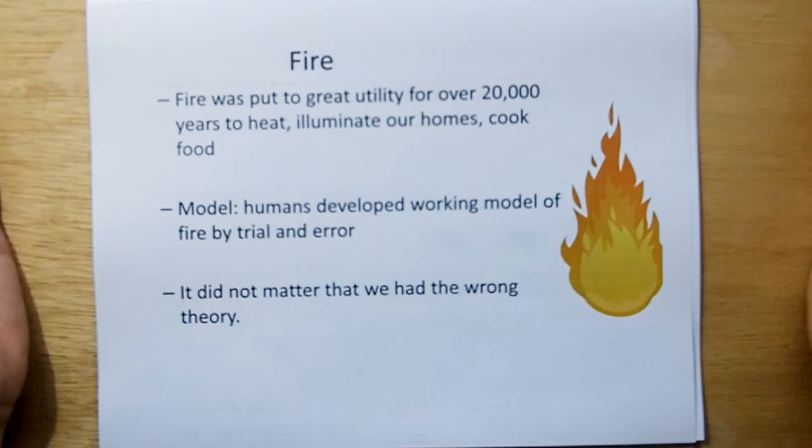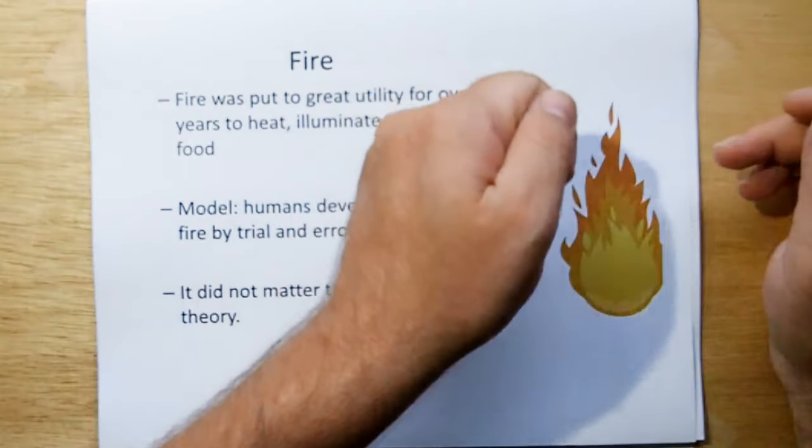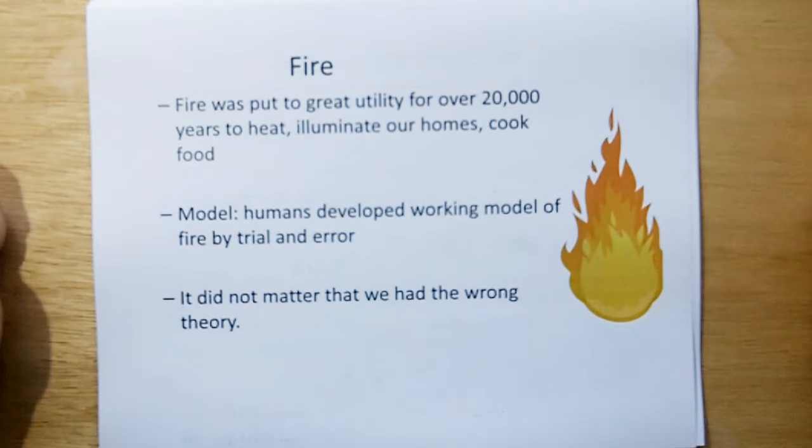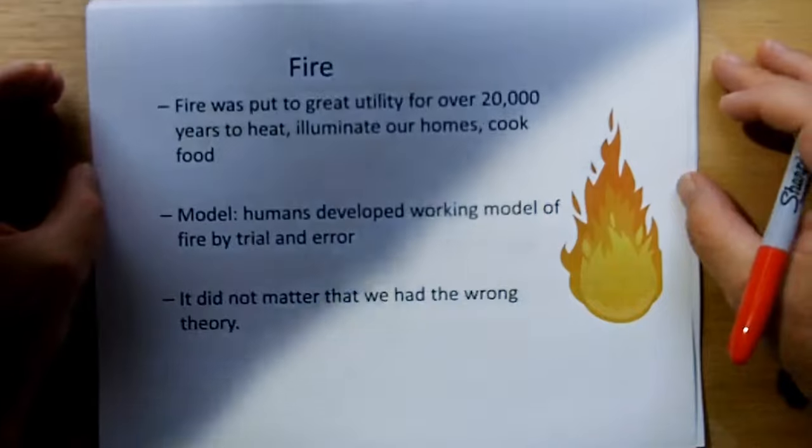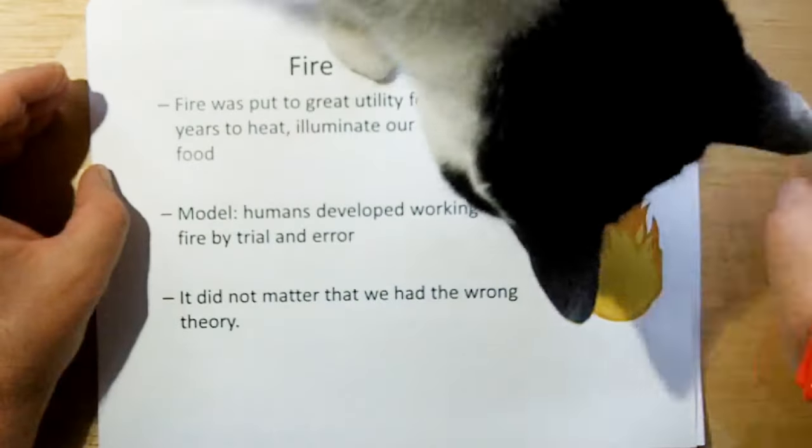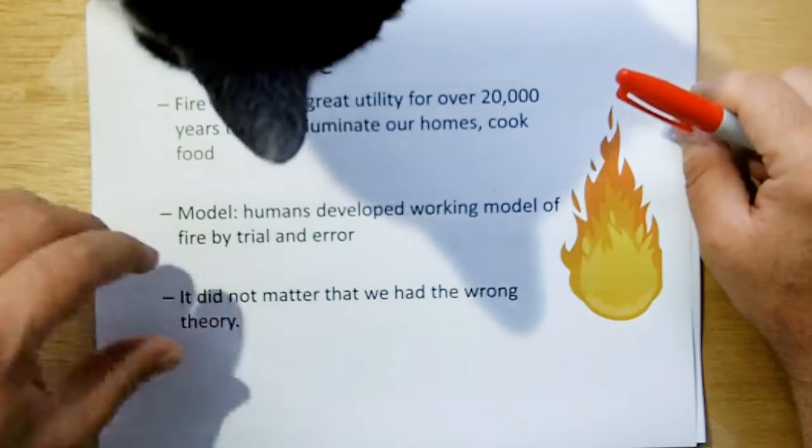Going back to the fire example, we used fire for over 20,000 years to illuminate our homes and cook our food. And humans developed a working model of fire by trial and error. Hey, let's see if this burns. If we put saltpeter, sulfur, and charcoal together, we get an interesting effect known as gunpowder. And we were able to, by trial and error, optimize the formula of gunpowder before we even had any idea of how to do chemistry. And so it did not matter that we had a wrong theory or no theory. We were able to obtain great utility.